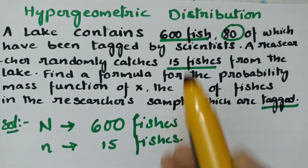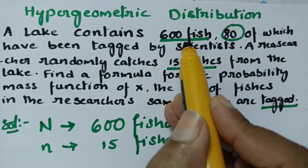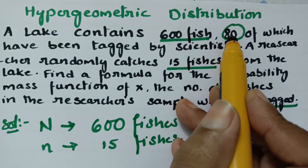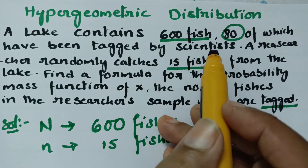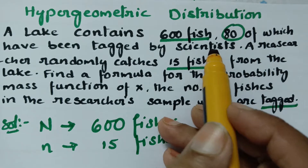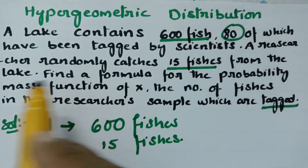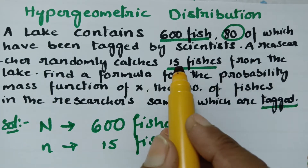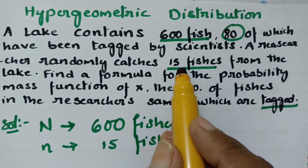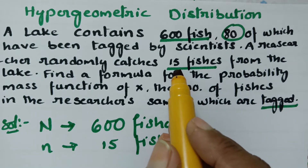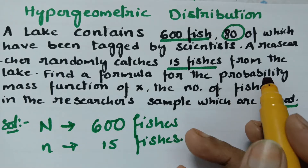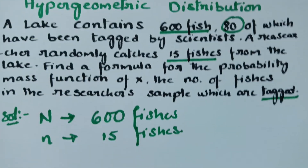The total number of fishes is 600. Out of 600, 80 fishes have been tagged by the scientists, and a researcher randomly catches 15 fishes. So randomly catching 15 fishes means small n — the sample size small n is given as 15. We have to find out the probability mass function.